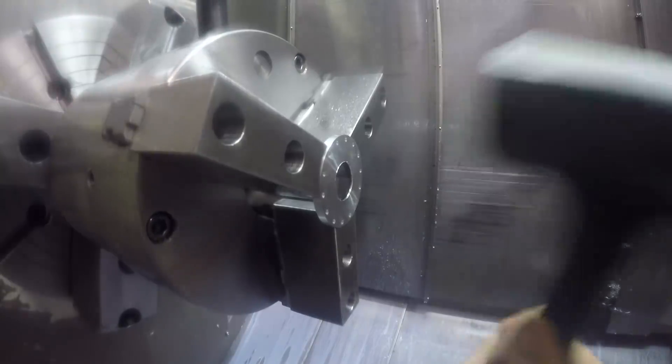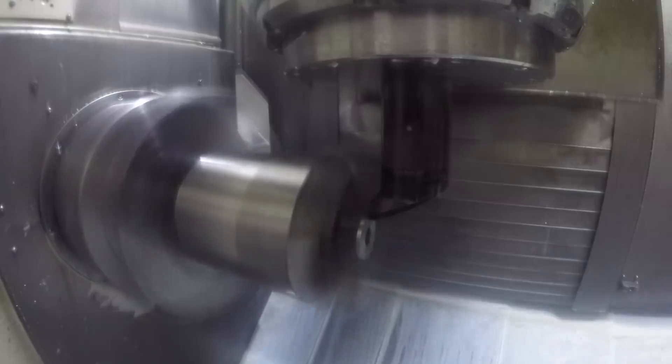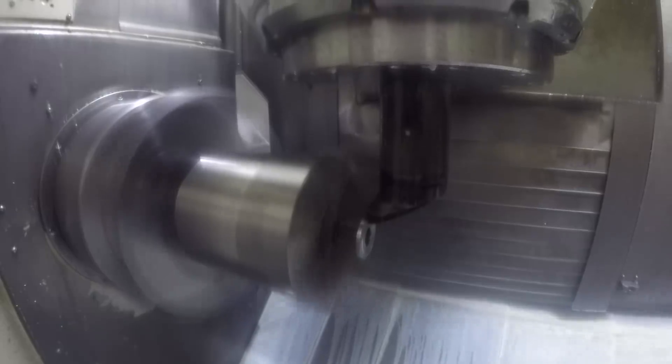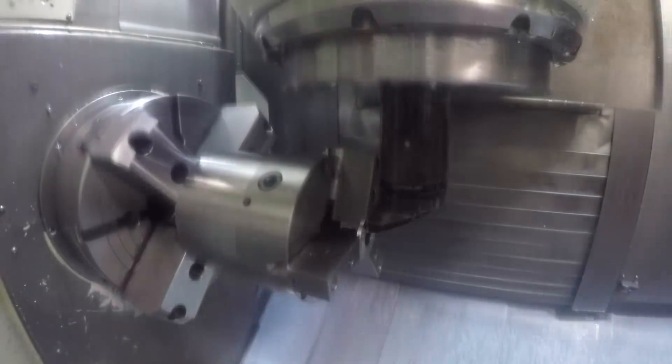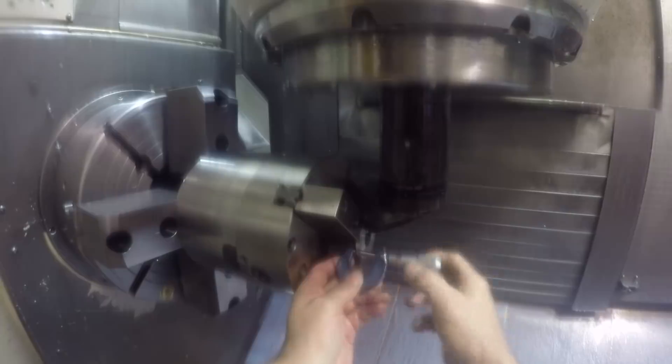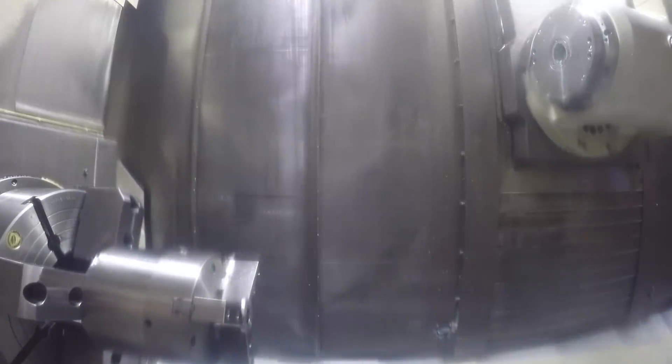Here I'm setting the Z zero on my fixture offset, so I take a skim cut and mic it and then set that appropriately for the thickness I want.